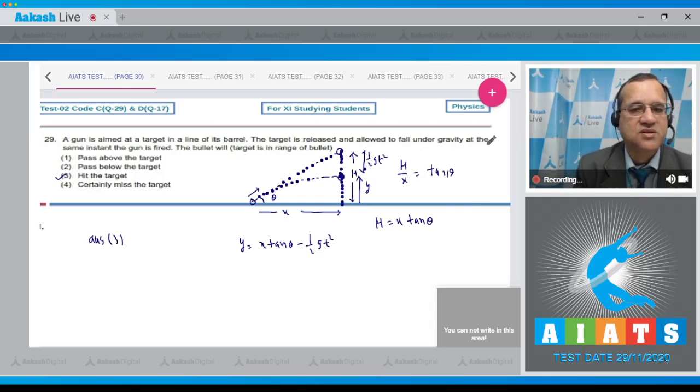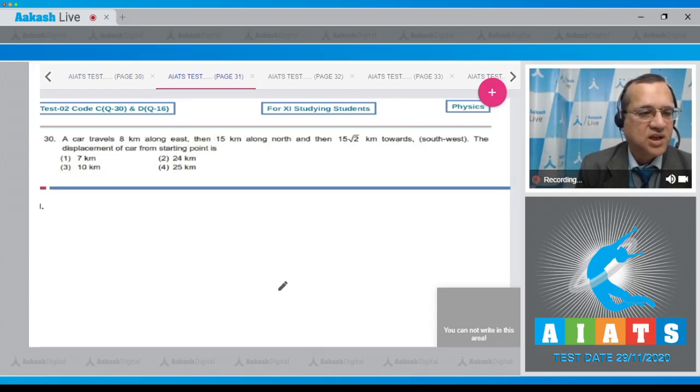Question number 30: A car travels 8 kilometers along east, 15 kilometers along north, and then 15 root 2 kilometers towards south-west. The displacement of the car from the starting point. This was the starting point - 8 kilometers east, then it's moving 15 kilometers north.